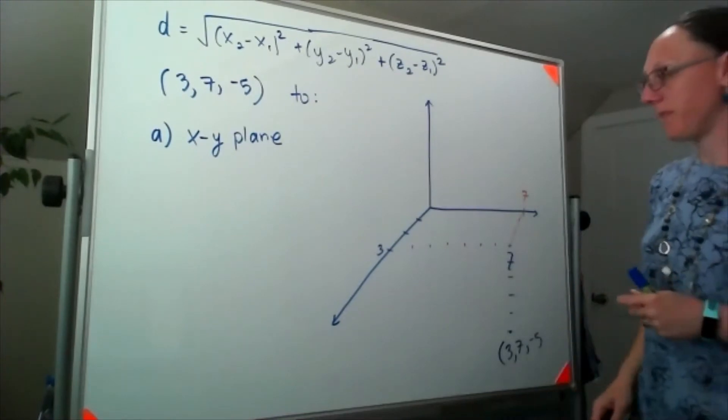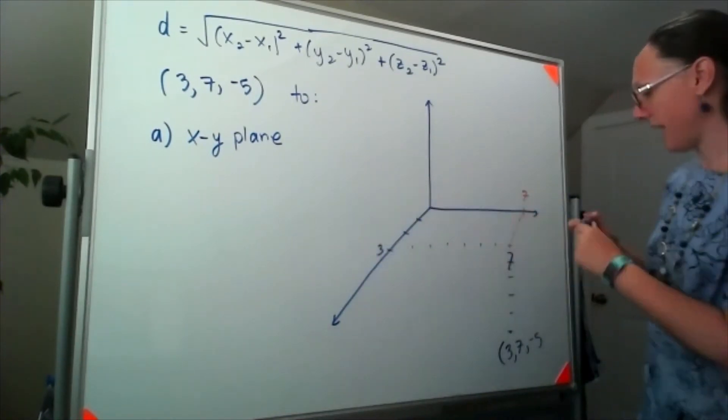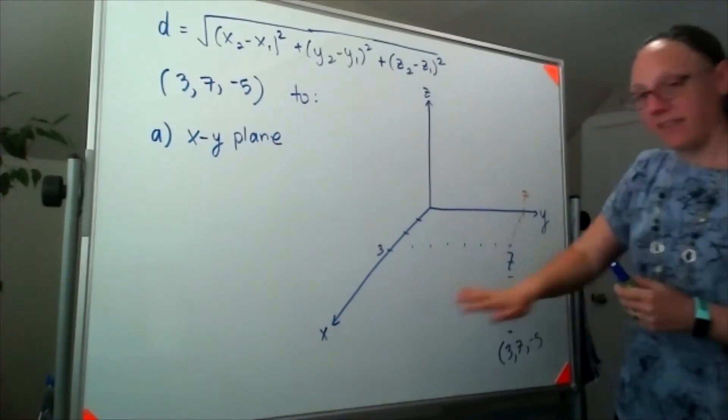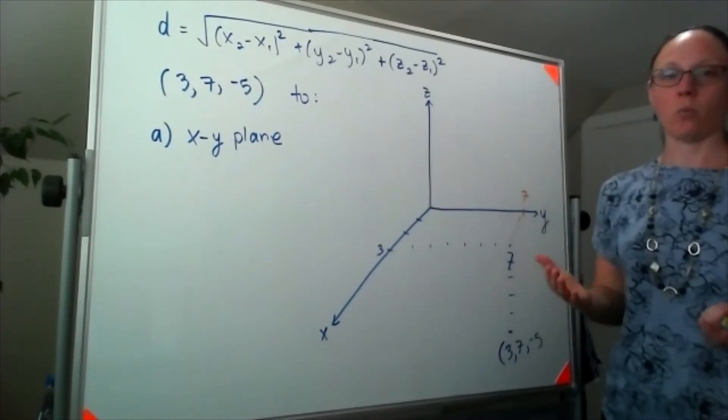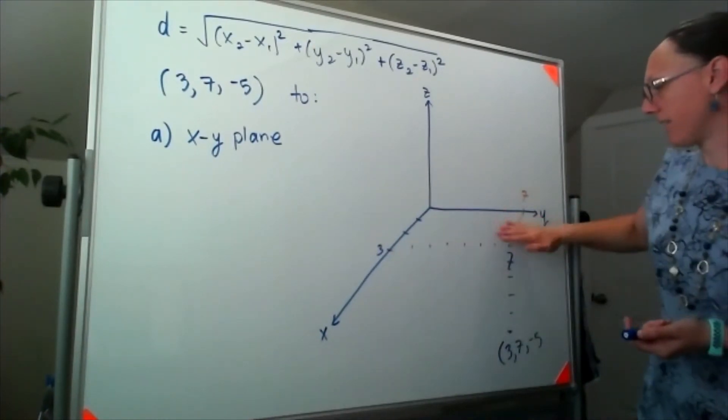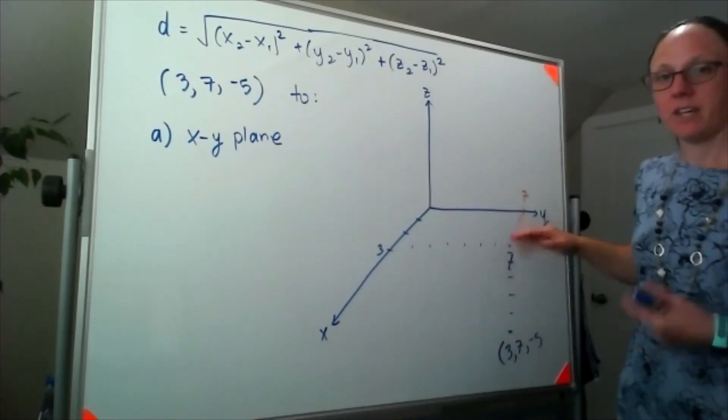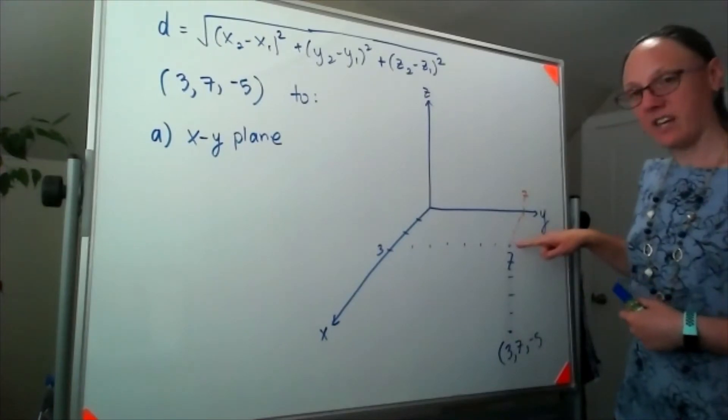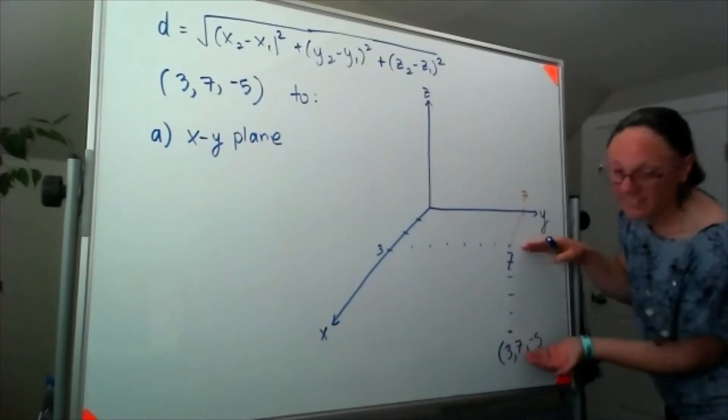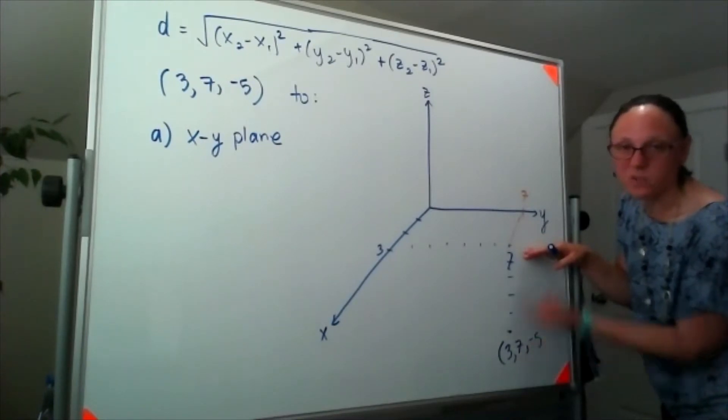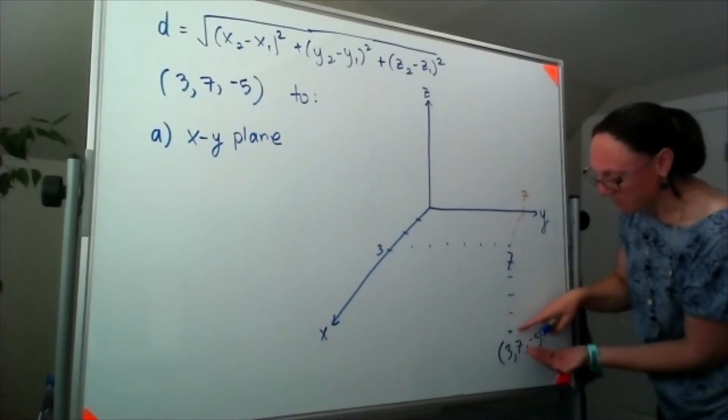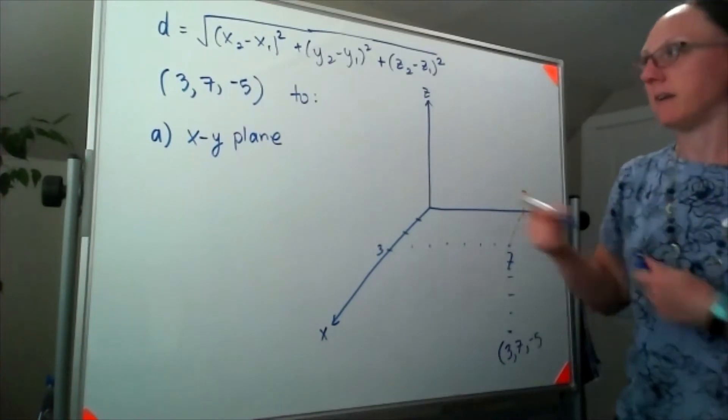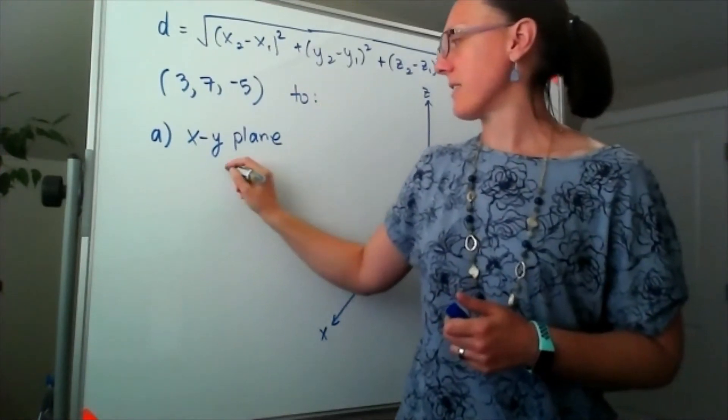So the xy plane, that means this flat plate here, because if that's z, that's x, and that's y, then the xy plane is secretly where z equals 0, it's kind of this flat sheet right here. So if I want to know the distance from this point up to z equals 0, well I know that's a distance of 5. I don't actually need to use the formula to know that, because this point is 5 steps below z equals 0, or below the xy plane, so that distance is 5.